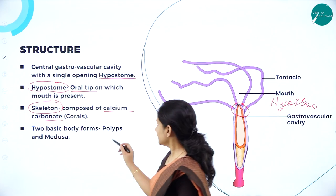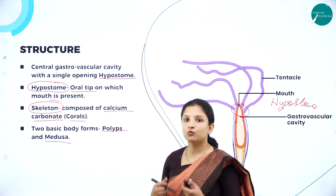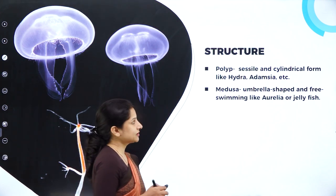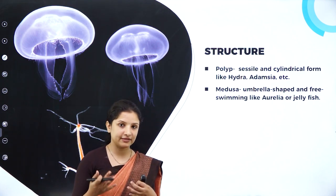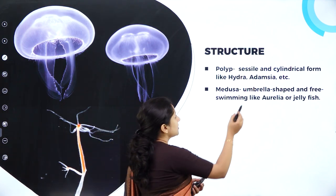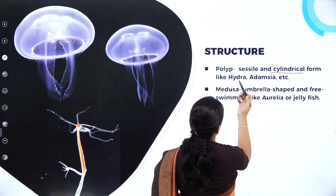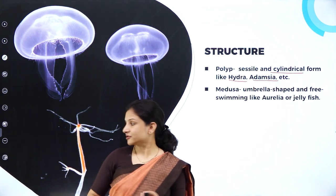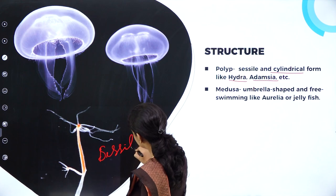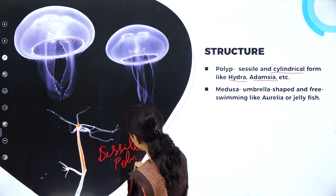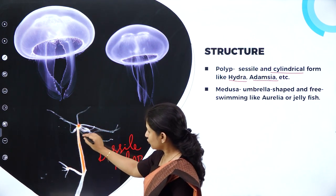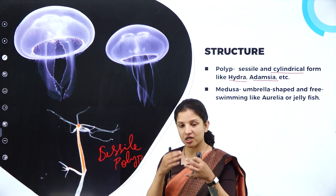Nidarians have two basic body forms: polyp and medusa. Polyp form is sessile — they stay in one particular place rooted to a substratum. They are cylindrical in shape; examples include hydra and adamsia. They bear a hypostome and tentacles. Those organisms with a cylindrical body shape that are sessile are called polyps. Those which are umbrella-shaped and free swimming — for example, aurelia, also called jellyfish — are called medusa form.